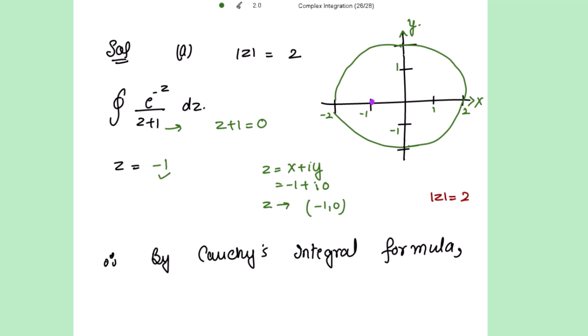And now as the point is lying inside this region, we are going to use the Cauchy integral formula for this point. What is the function given to us? f(z) is e to the power negative z. So by Cauchy integral formula, we have closed integral f of z over z minus the point.